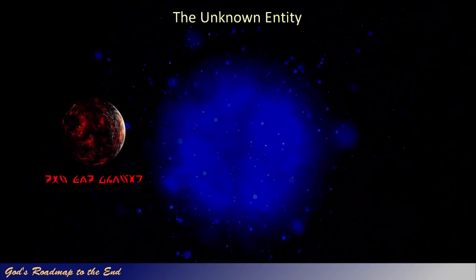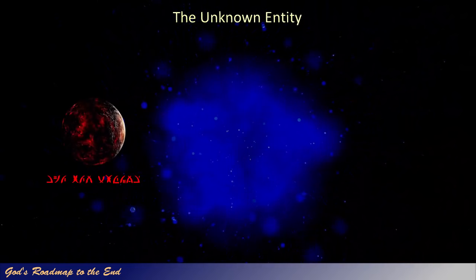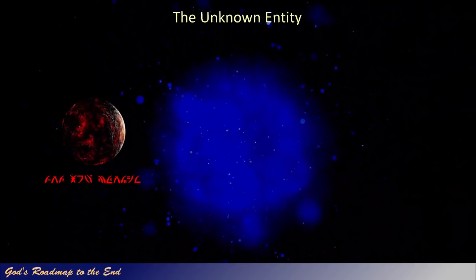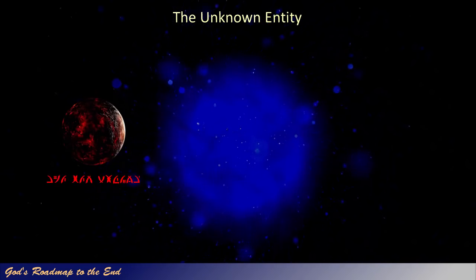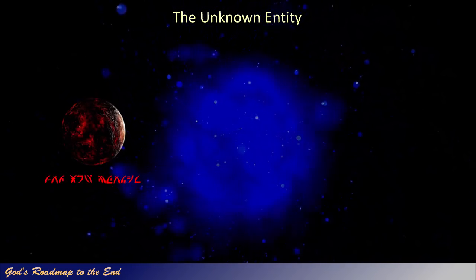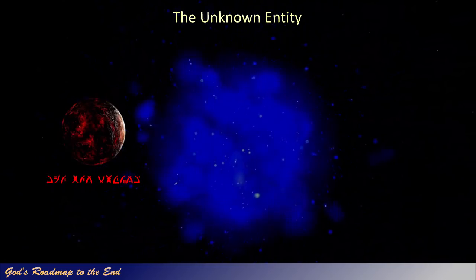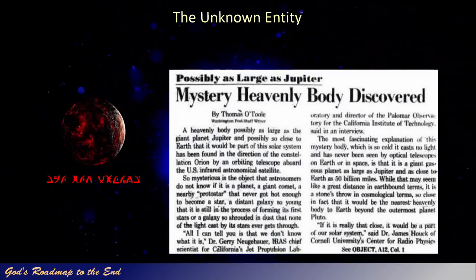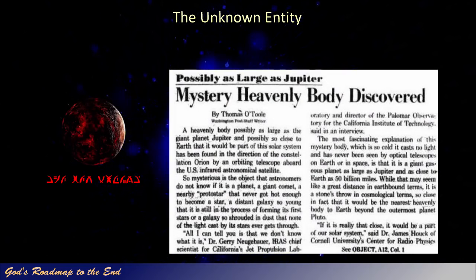If you believe that the elusive object known as Nibiru, Planet X, or Nemesis is just a subject for conspiracy theorists, then please consider the following. We know from secular media that NASA discovered a foreign celestial object or planetary system with particular attributes in 1983. This was reported in the Washington Post.